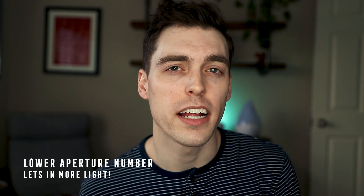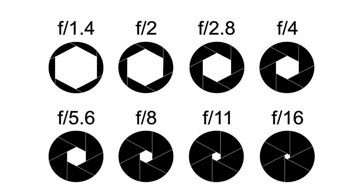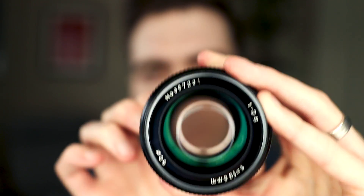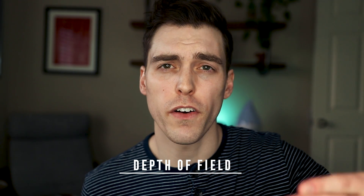An important thing to remember when talking about aperture is that a lower number actually lets in more light. So a lens with f/1.4 is going to let in more light than an f/3.5 or f/4 lens. It's kind of backwards — smaller number, more light; bigger number, less light. Now, what does that mean for photography and videography? The size of this hole obviously changes the amount of light entering the lens and being projected onto the image sensor. But it also controls your depth of field — the area of sharpness either near or far within a given photograph or video.